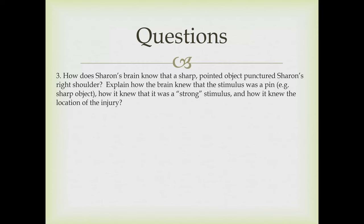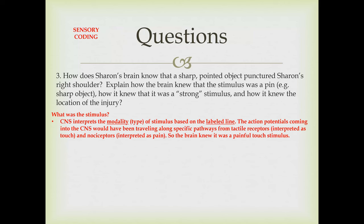Question three: how does Sharon's brain know that a sharp pointed object punctured Sharon's right shoulder? The central nervous system interprets the modality or type of stimulus based entirely on a labeled line. Action potentials traveling along a specific pathway from a tactile receptor to the sensory cortex would be interpreted as touch, while nociceptors have a pathway going to the primary sensory cortex interpreted as pain. If both labeled lines arrive simultaneously, the brain knows it's a painful touch stimulus.